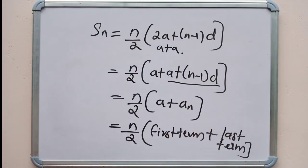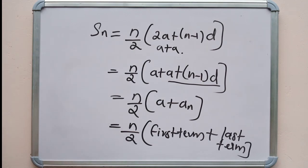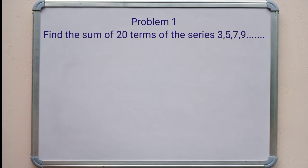So Sn equals N by 2 into (first term plus last term), where the last term is the Nth term. If you write A plus the Nth term, that gives you the sum formula.